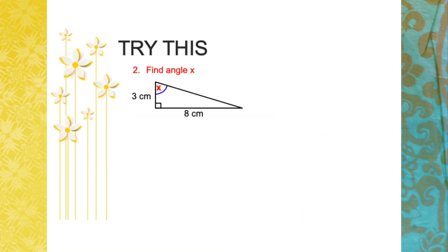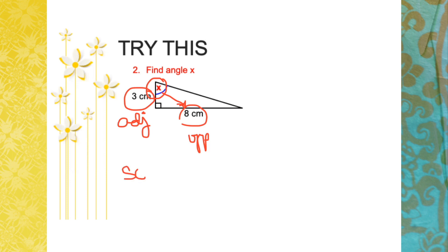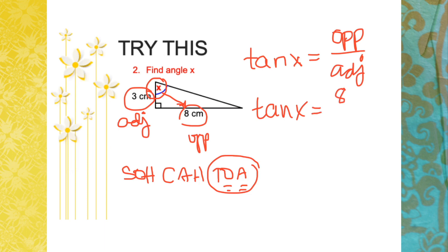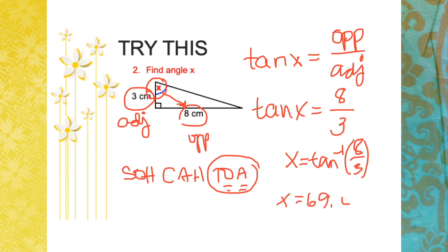Another example: we are asked to find angle x. Identify the given — the opposite side of angle x and the adjacent side of angle x are given. From SOH-CAH-TOA, TOA uses opposite and adjacent, so we use tangent. Tangent x equals opposite over adjacent, which is 8 over 3. Therefore x equals the tan inverse of 8 over 3, which gives us 69.4 degrees.